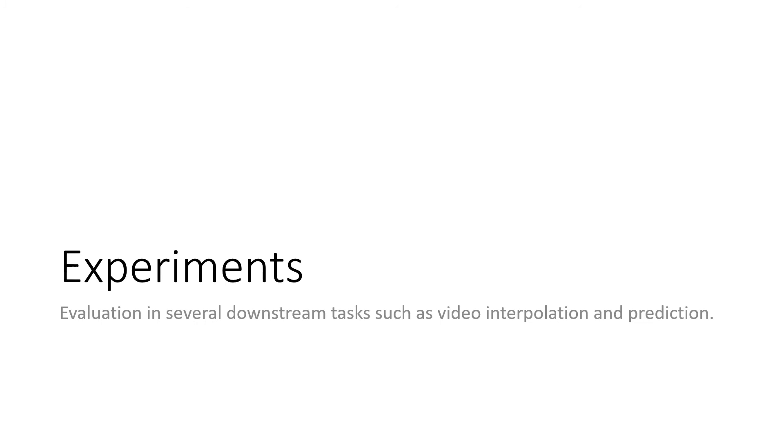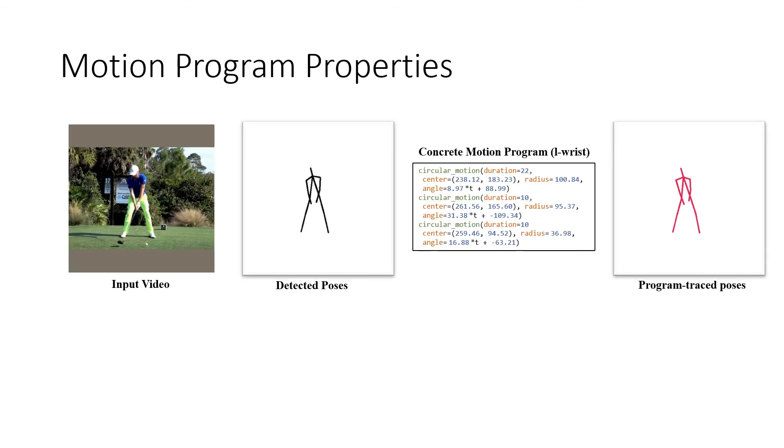We now evaluate the motion programs generated. We conduct exhaustive experiments to evaluate the representative power and the downstream task performance. First, we synthesize concrete motion programs on a large dataset of golf swing videos and evaluate the representative power.